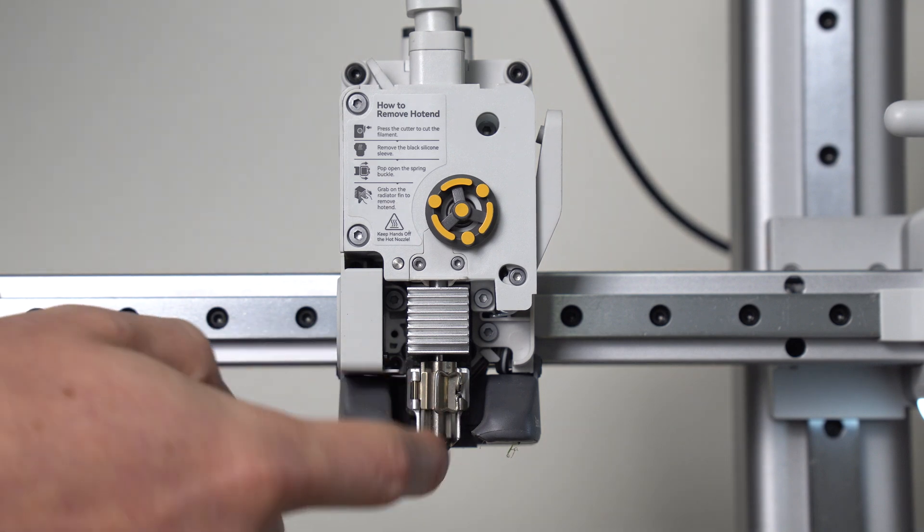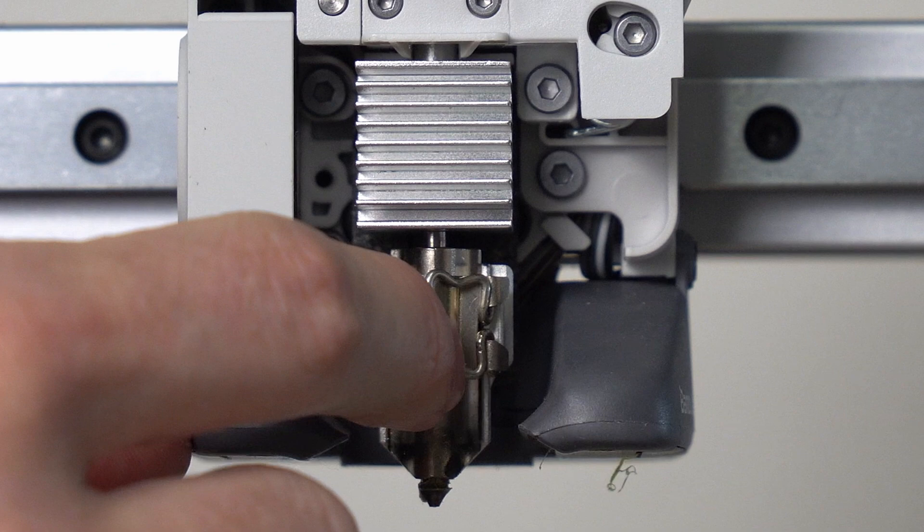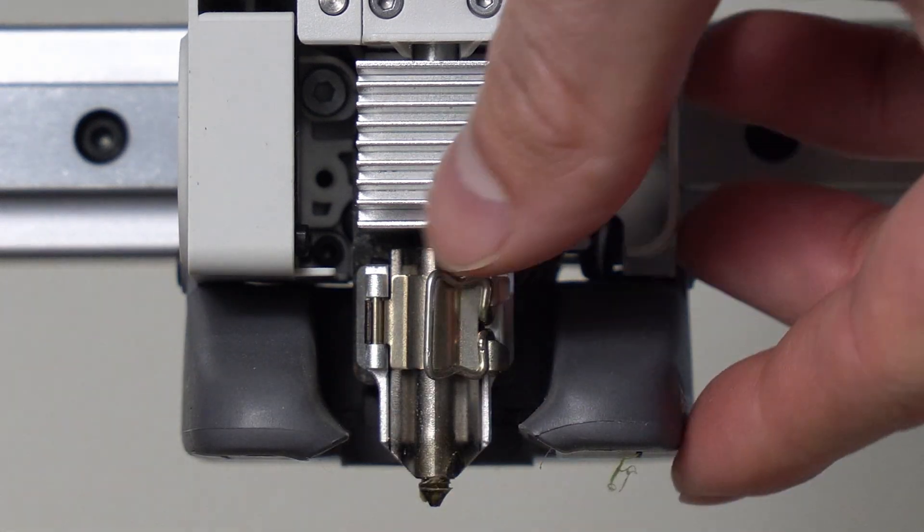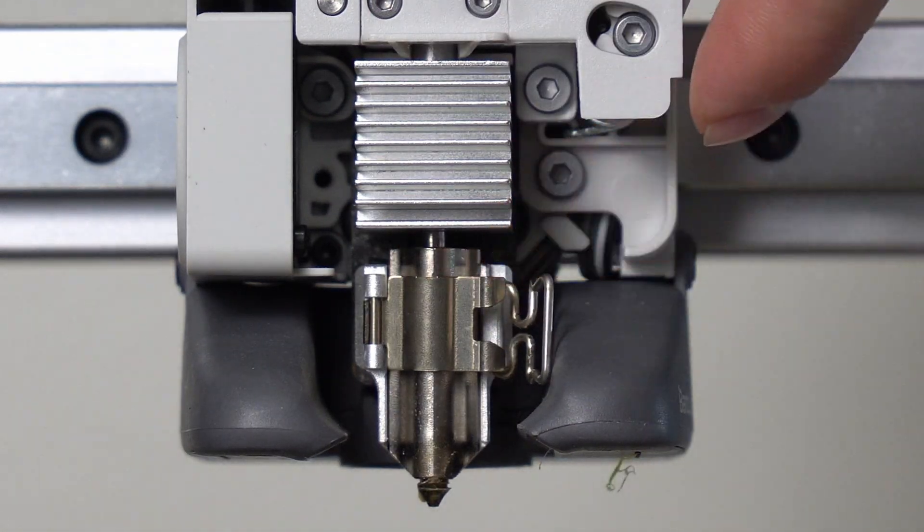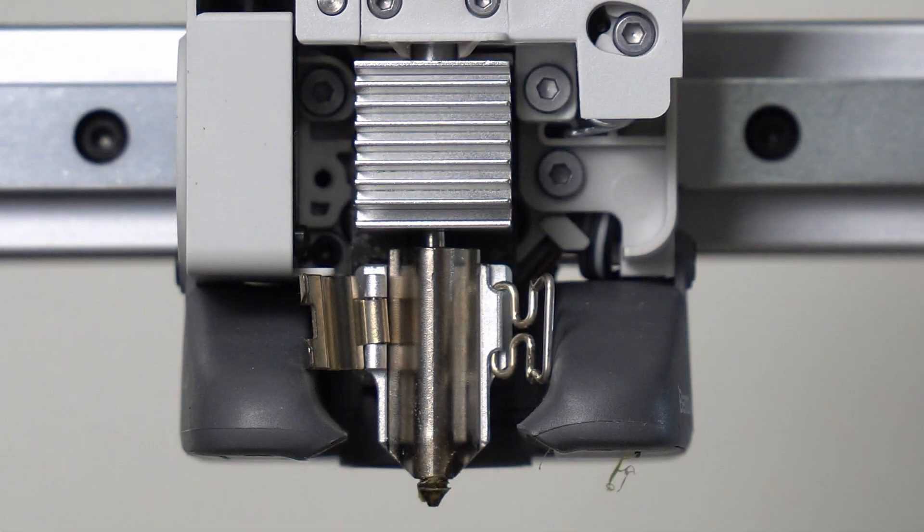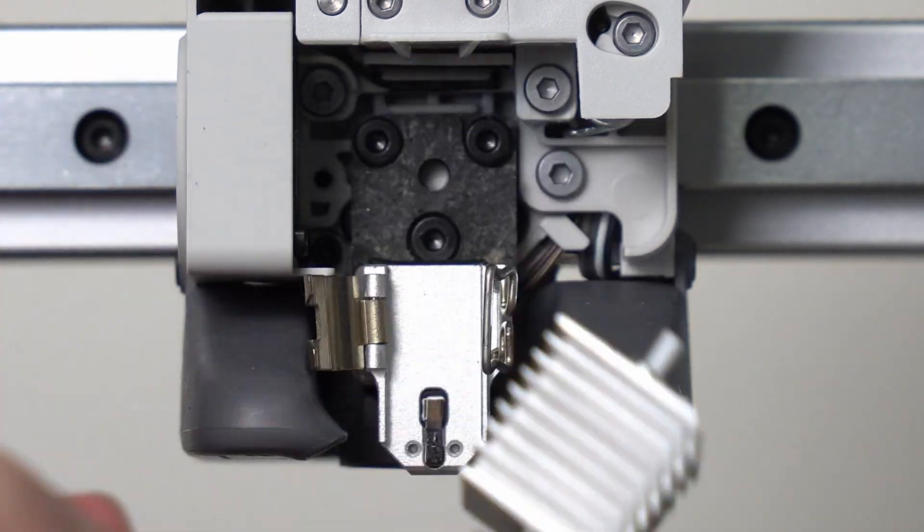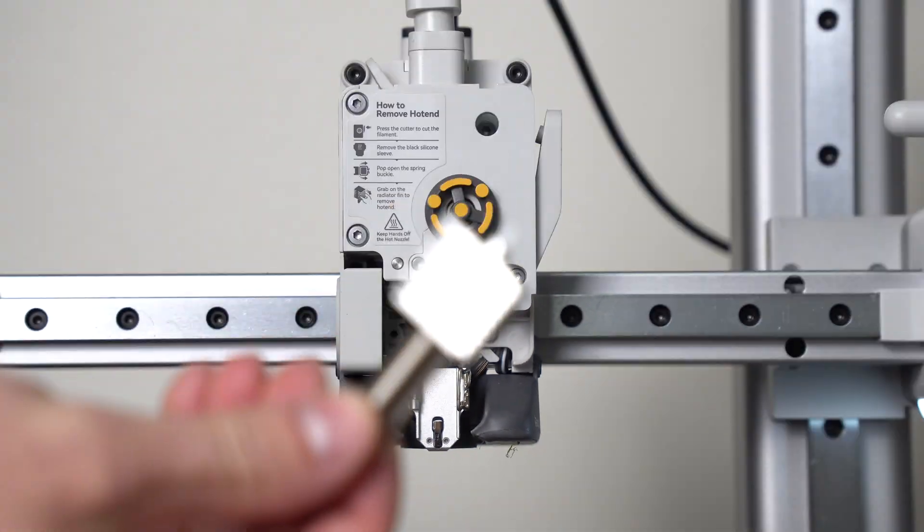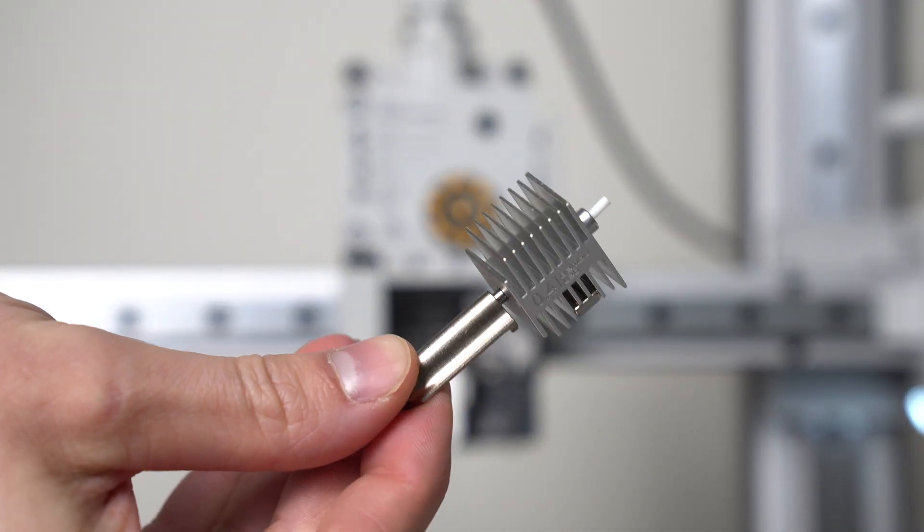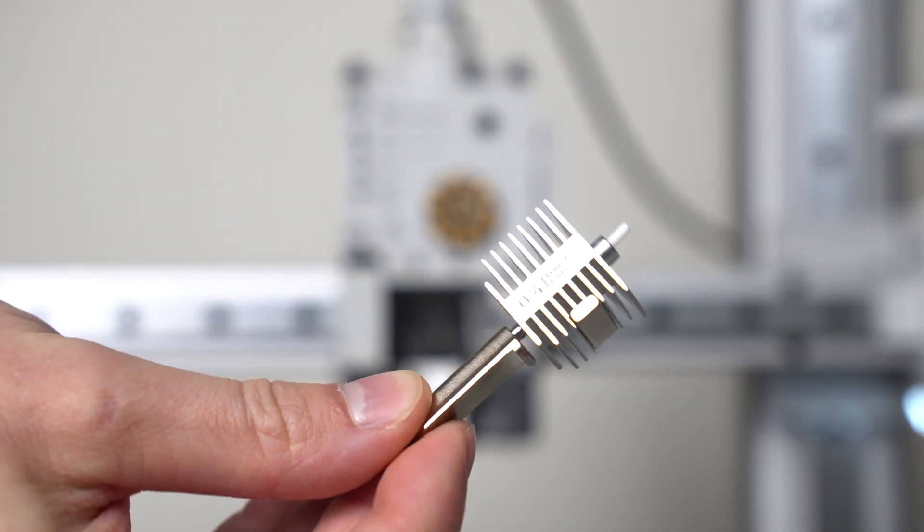And so now we have the hot end exposed and it's just this little latch which will pull over to the right. This other piece flips back and then the hot end can be taken out. And it's really that simple.